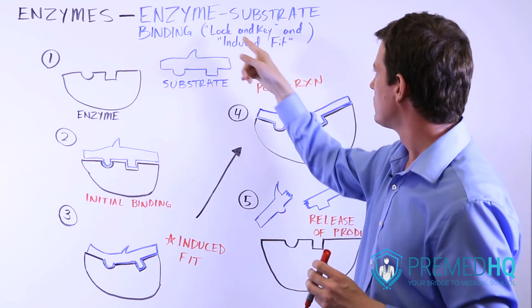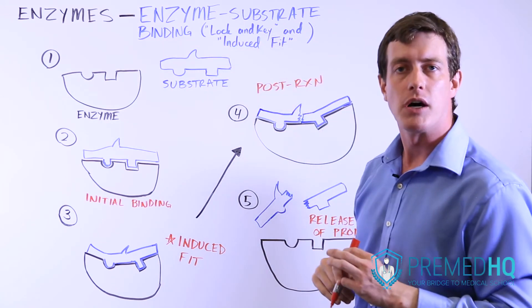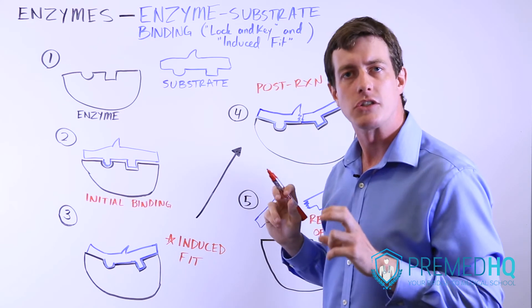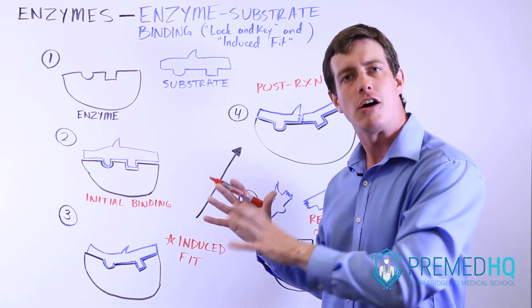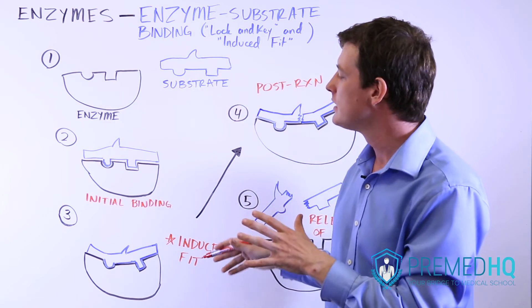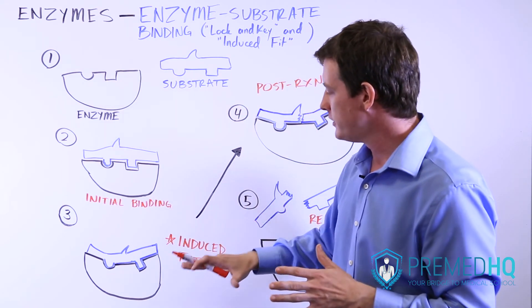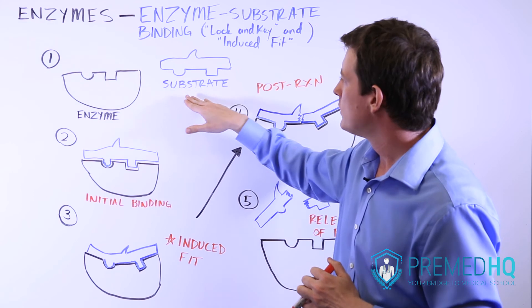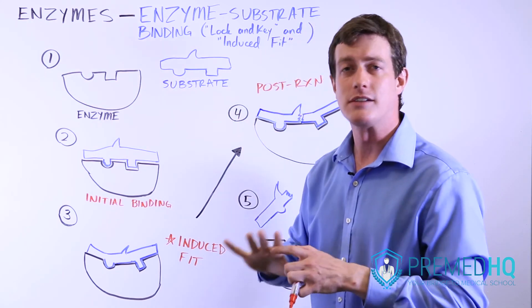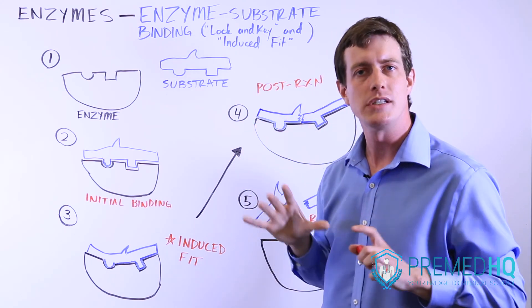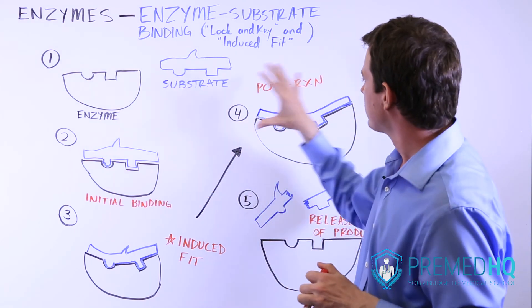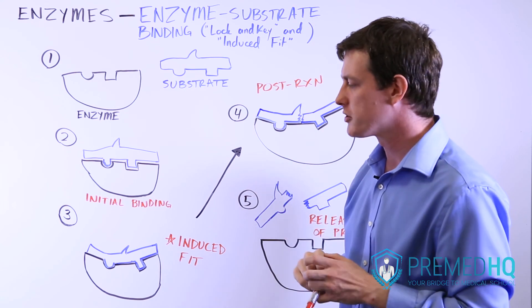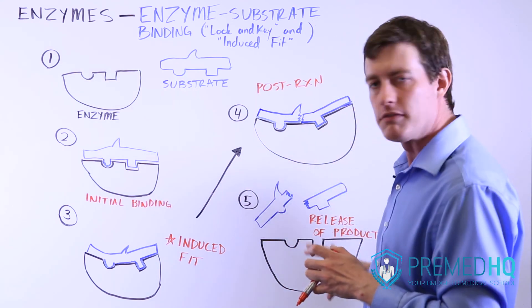Know the difference between these two models, the lock and key model and the induced fit model. Know what they mean, and especially the induced fit model where the enzyme undergoes a conformational change. That's a key word you'll see a lot. If an enzyme undergoes a conformational change once the substrate is loaded, that means that you're looking at an induced fit. Be aware of this idea of specificity, that a substrate will fit exactly into an active site of an enzyme that's defined by the protein structure and all those protein interactions. Once you understand those things, then I think it becomes clear the way in which enzymes can catalyze different reactions, and you'll be able to answer questions when they ask you about specific components of this process.